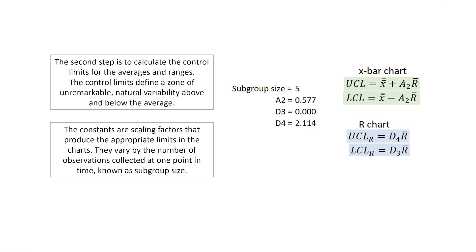The constants are scaling factors that produce the appropriate limits in the charts. They vary by the number of observations collected at one point in time, which is what we know as a subgroup size.